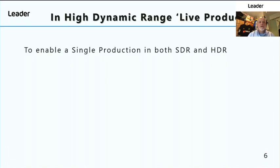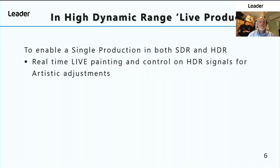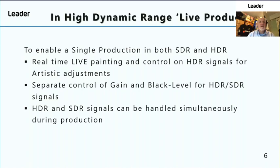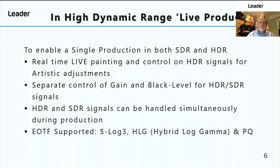To enable a single production in both standard dynamic range and high dynamic range is the challenge. You need real-time live painting and control on the high dynamic range signals for artistic adjustment. You need separate control of gain and black level for high dynamic range and standard dynamic range signals, and HDR and SDR signals can be handled simultaneously during production. The electrical to optical transfer support for S-Log 3, hybrid log gamma, and PQ is also required.